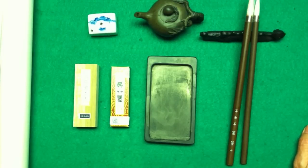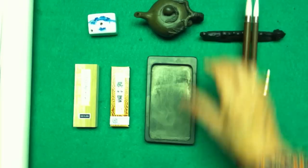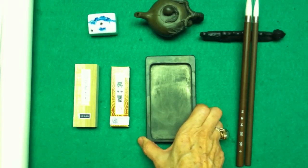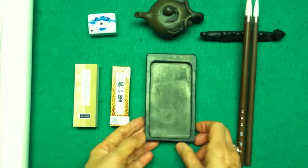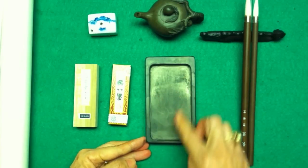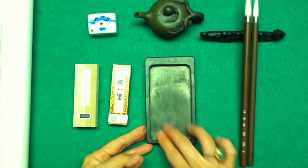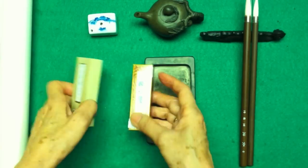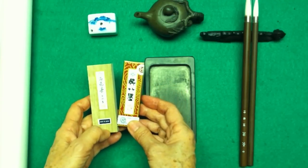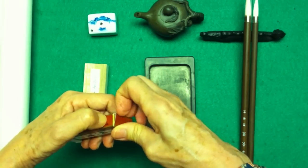These are the equipment and supplies I use for my paintings and calligraphy art. First, we need to have a grinding stone like this, a slate stone that's been carved with a flat area to grind the inks. These are two types of sumi inks that Green Jade supplies carry.